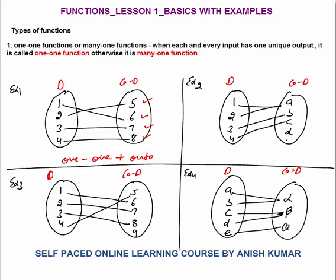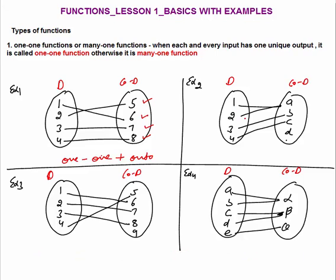Second example: is this a one-one function? No. You can see that input 1 as well as input 2 both have the same output, which is A. So this is not a one-one function. One-one function simply means that each and every input should have its own unique output — they can't have the same output. Here, inputs 1 and 2 have the same output A, so this is a many-one function. Many inputs to one output — that is called a many-one function. Can you tell if it is onto or into? It is an into function, because element D is not connected with any element of the domain.